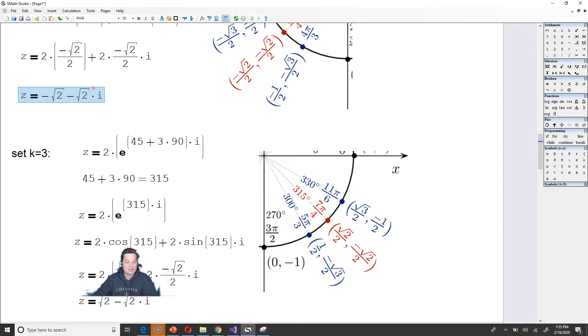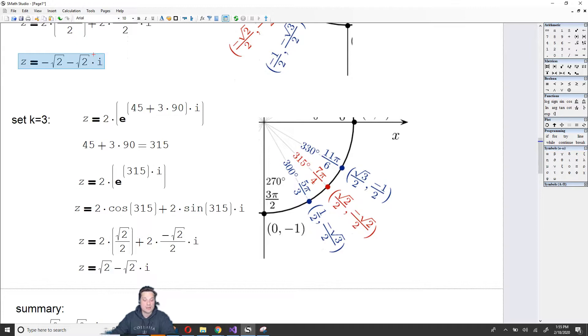So back here, replace cosine of 315 with positive root 2 over 2 times that 2. Replace sine of 315 with negative root 2 over 2 times that positive 2. And then simplify. So as before, this 2 will cancel with that leaving root of 2. This 2 right here will cancel with that leaving negative root 2 in this position. So this then is the last and fourth root.